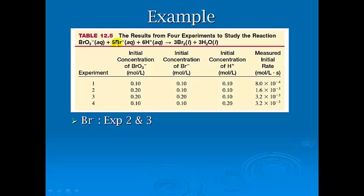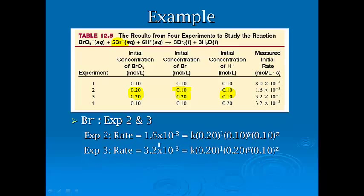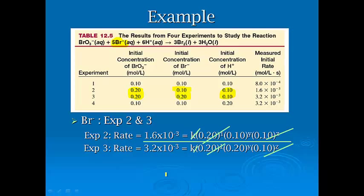Now for bromide, we're going to pick experiments 2 and experiments 3. Why? Because everything else stays the same and bromide changes. Staying the same for bromate, staying the same for hydrogen ion. So we put them over each other and we divide. It actually would not matter which one that you put on top. It depends if you want to use whole numbers instead of fractions. If I flip this upside down, instead of getting 0.5 is equal to 0.5y, I'd get 2 is equal to 2y. We get y equals 1. So when we were to plug that in, that is also to the first order.